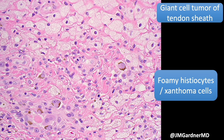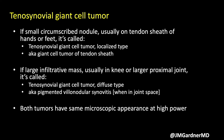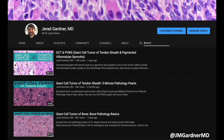Also look for foamy histiocytes — xanthoma cells. Not always present, but oftentimes you'll find them particularly around the periphery of the lesion. To summarize: if it's a small circumscribed nodule on the distal extremity, it's called the localized form of tenosynovial giant cell tumor, also known as giant cell tumor of tendon sheath. If it's a large, deep infiltrative mass around the more proximal larger joints, we call it the diffuse type of tenosynovial giant cell tumor, aka pigmented villonodular synovitis when it's in a joint space. If you do dermpath only, you'll basically only encounter the localized form, and even then it's rare. The key point is they're the same tumor — just different presentations and growth patterns — but at higher power they look identical, made up of the same kinds of cells.